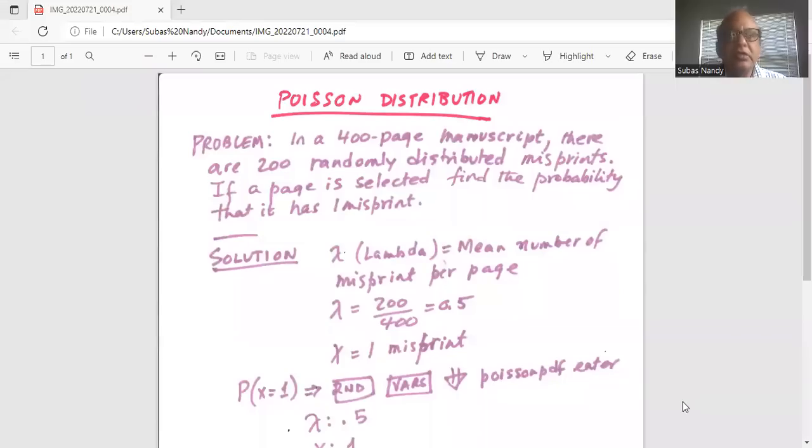Poisson distribution is not pronounced as Poisson, it is Poisson distribution. Problem: In a 400 page manuscript, there are 200 randomly distributed misprints. If a page is selected, find the probability that it has one misprint.